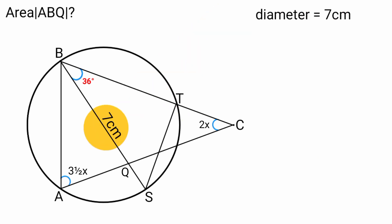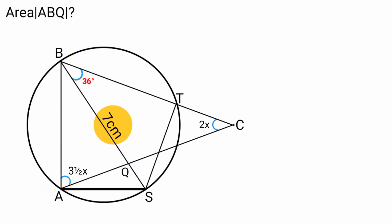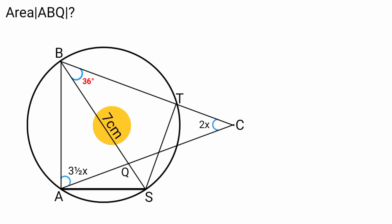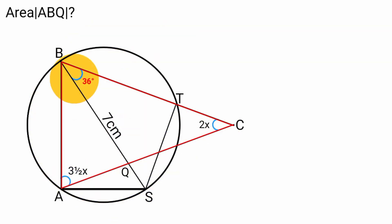Now if we draw a line from point A to point S, we form triangle ABS with line BS as one of its sides. We can use this triangle to find the length of line AB. From triangle ABC, since the base angles are equal, both base angles are 3.5X, and the vertex angle is 2X.